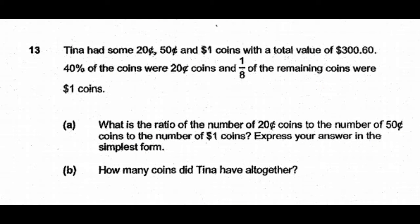Let's look at a question from Henry Park Primary School 2019 prelims paper. This is a five mark question. Question number 13: Tina had some 20 cent, 50 cent, and one dollar coins with a total value of $300.60. 40% of the coins were 20 cent coins and one-eighth of the remaining coins were one dollar coins.